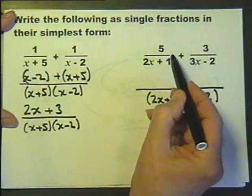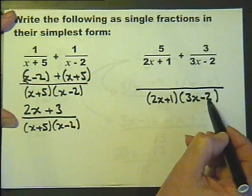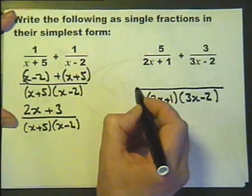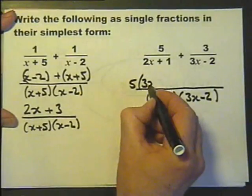Looking at this fraction to this fraction, the bottom has been multiplied by 3x minus 2, so I must multiply the top by 3x minus 2. In other words, here I need 5 multiplied by 3x minus 2.